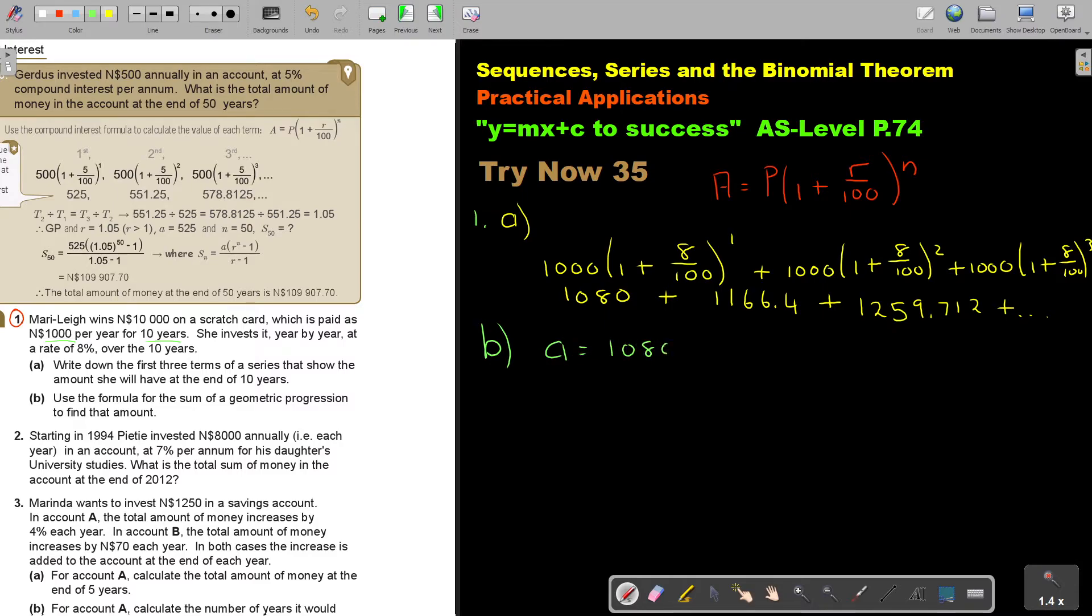My value of R, remember this is term 1, term 2, term 3. So I can even take, I have now term 3 on my calculator. So let's just divide it by term 2, 1166.4. And the value of R is 1.08. You can either get it by T3 divided by T2, or T2 divided by T1, and you will also see that those two will be equal.